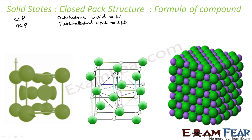In ionic solids, the bigger ions — mostly anions, for example Cl⁻ in this case — will occupy the lattice points. Anions are the negative ions. So Cl⁻ will occupy the lattice points, and the smaller ones will occupy the voids. For example, Na⁺ will be in the voids.